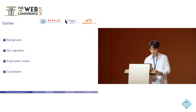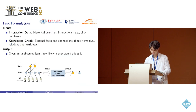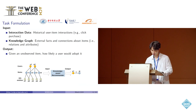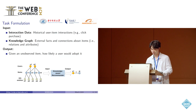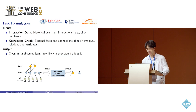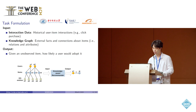My presentation will be divided into four parts. First, we introduce our task: Knowledge Enhanced Recommendation with two kinds of structured input. They are interaction data and knowledge graph. Interaction data contains historical user-item interactions, such as click or purchase behavior. And knowledge graph contains external facts and connections of elements, for example, item relations or attributes.